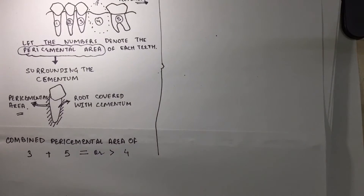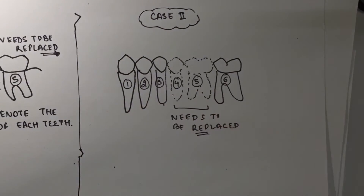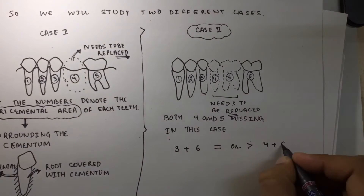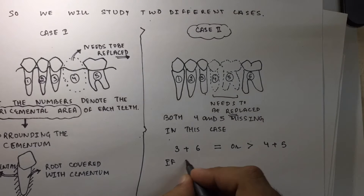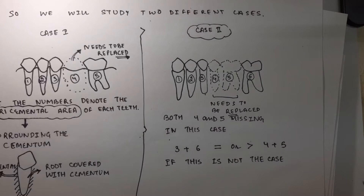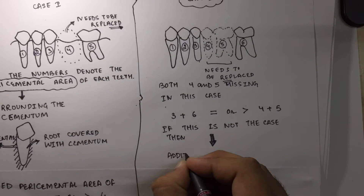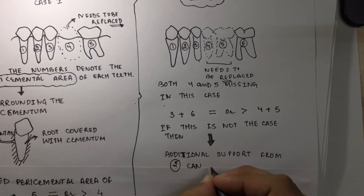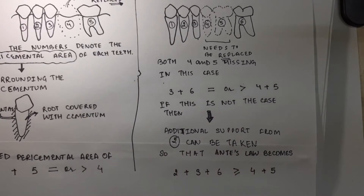In Case 2, if both four and five are missing, the combined pericemental surface area of teeth three and six should be equal to the combined pericemental surface area of four and five. If not, the prosthesis will fail. For such cases, Ante's Law can be fulfilled by taking additional support so that teeth two plus three plus six equals four plus five.